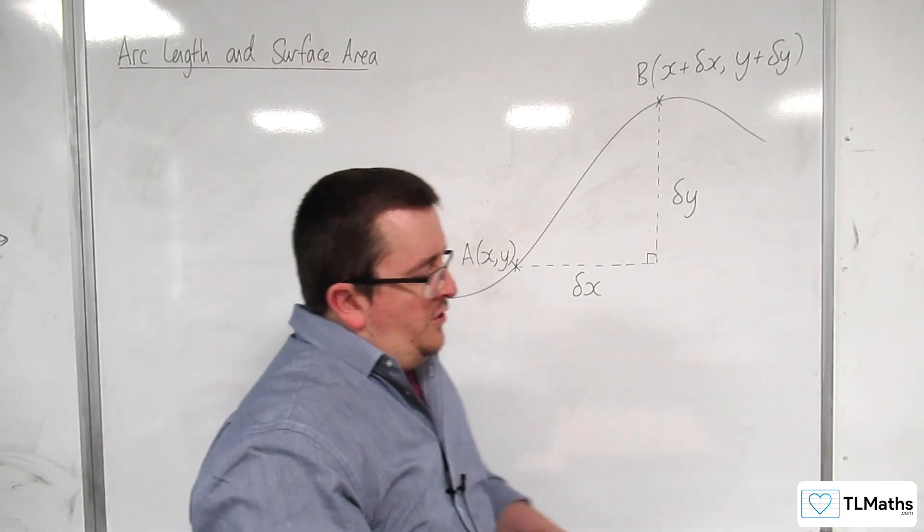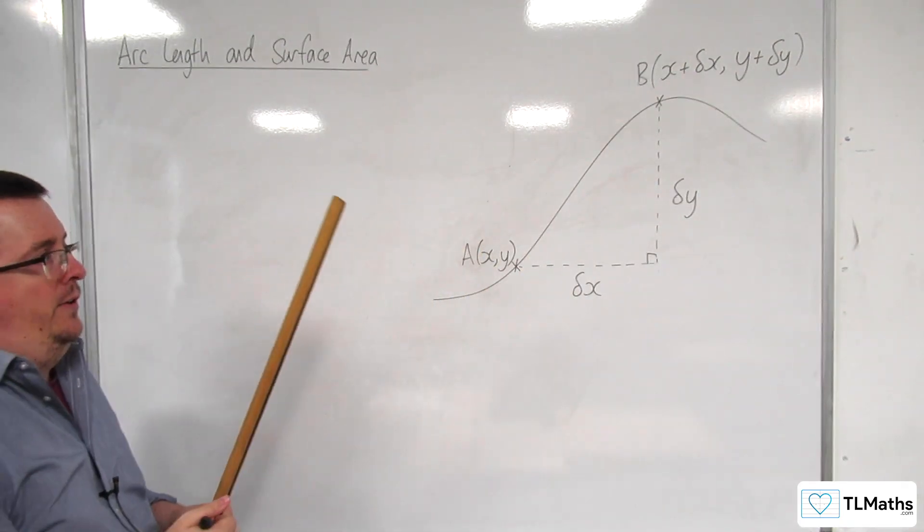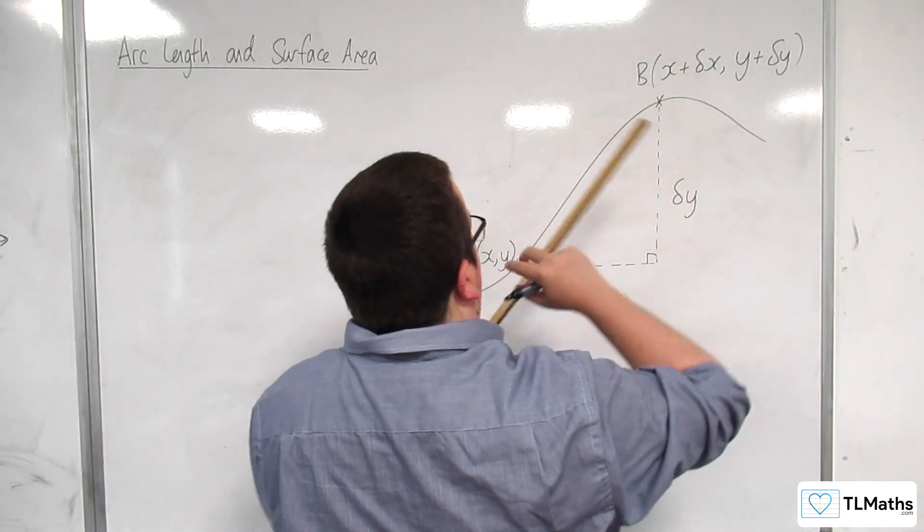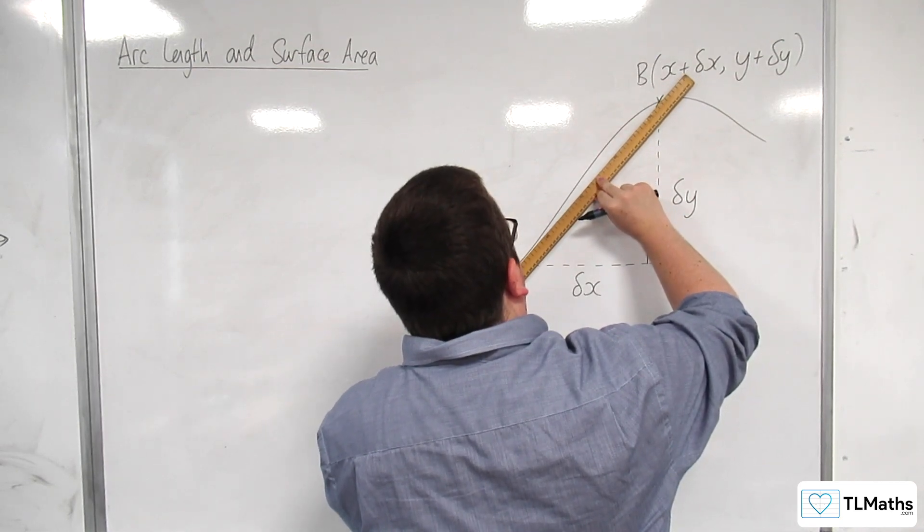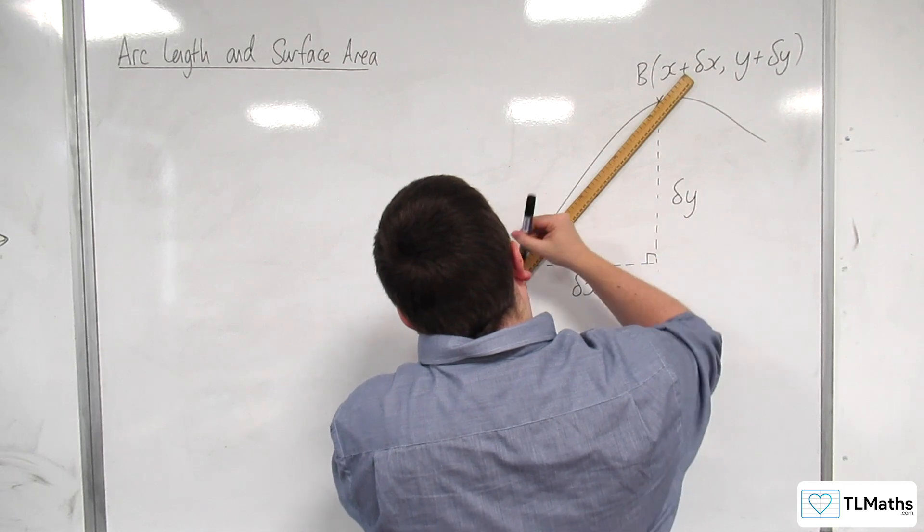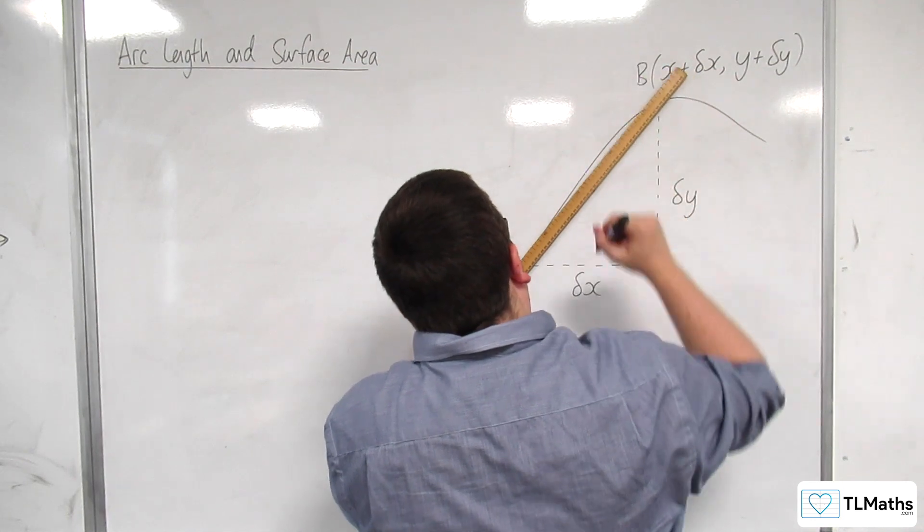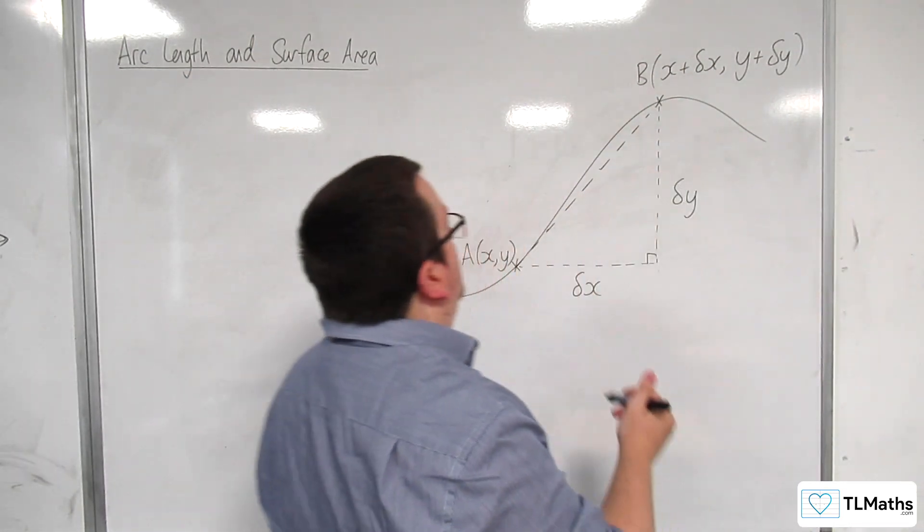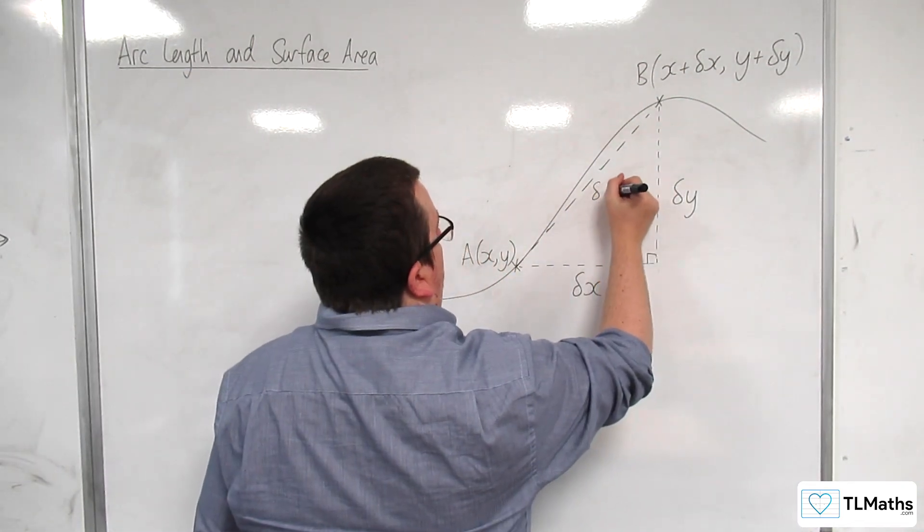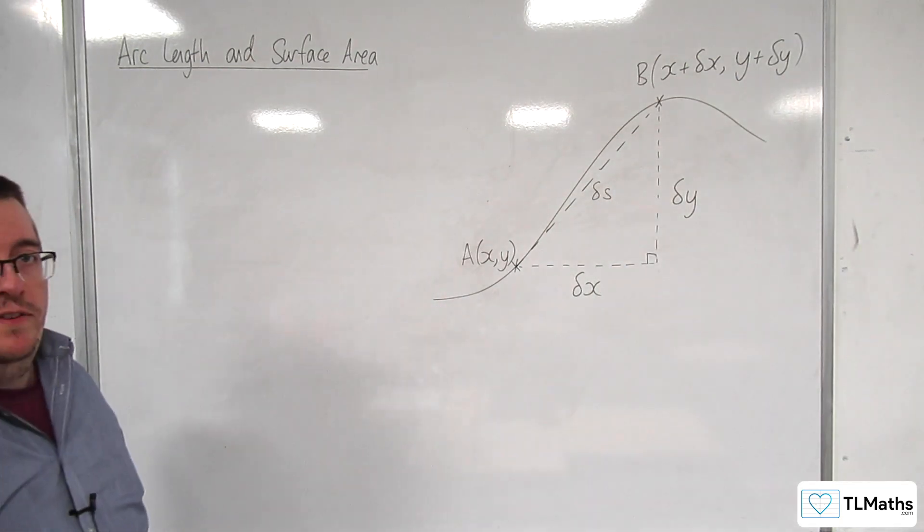So what we're going to do is we are going to approximate the length of the curve from A to B by the straight line joining A and B. And we're going to call that delta S. And that's the hypotenuse of a right angle triangle.